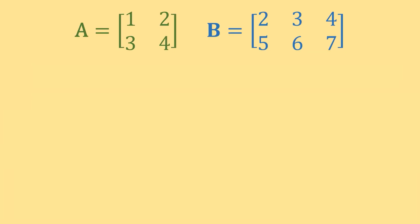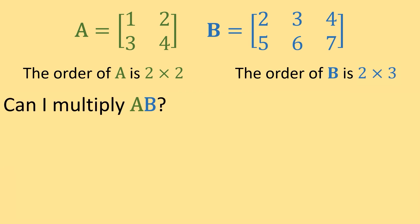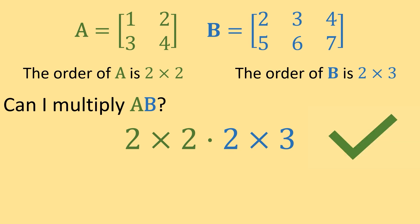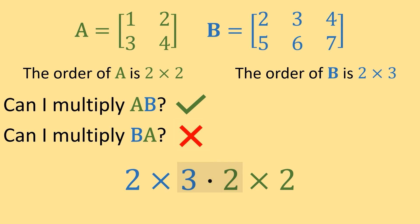Let's answer a few more questions with a new matrix A and matrix B. The order of matrix A is 2 by 2, and the order of matrix B is 2 by 3. Can we multiply AB? Yes — the columns in the first matrix equal the rows in the second: 2 by 2 times 2 by 3 works. Can we multiply BA? That would be 2 by 3 times 2 by 2. The interior numbers don't match, so we cannot multiply B times A.